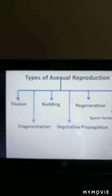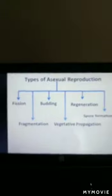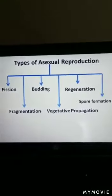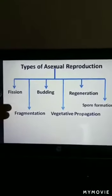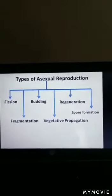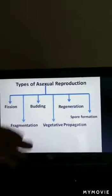Now let's look at the various modes of asexual reproduction. This reproduction mainly takes place by fission, fragmentation, budding, vegetative propagation, regeneration, or spore formation. Let's go into the detail of all these types of reproduction one by one.